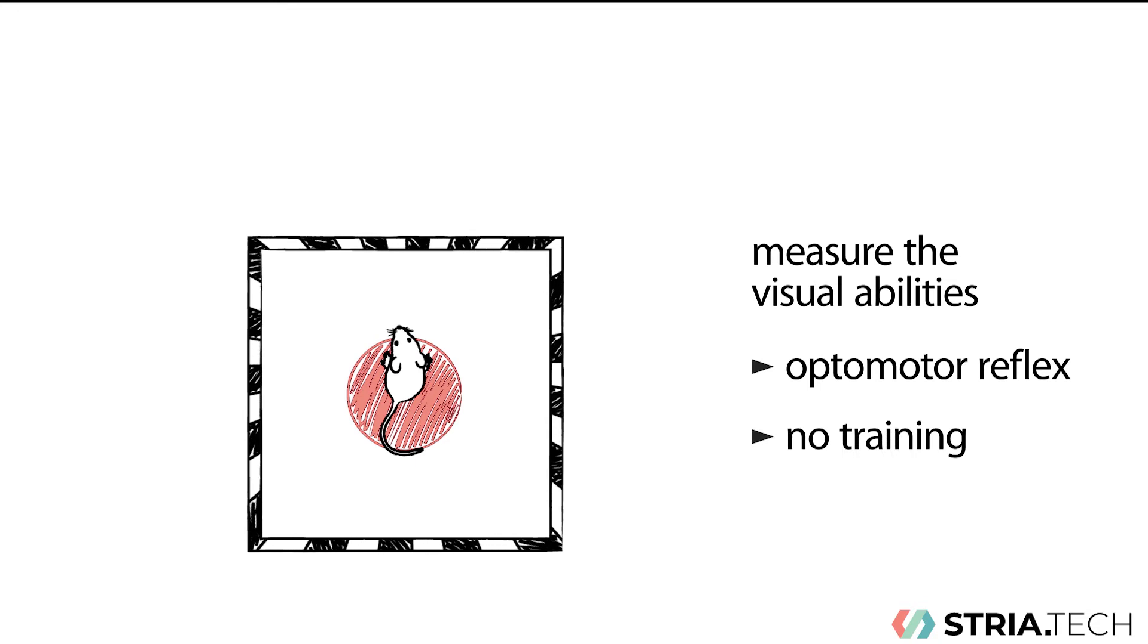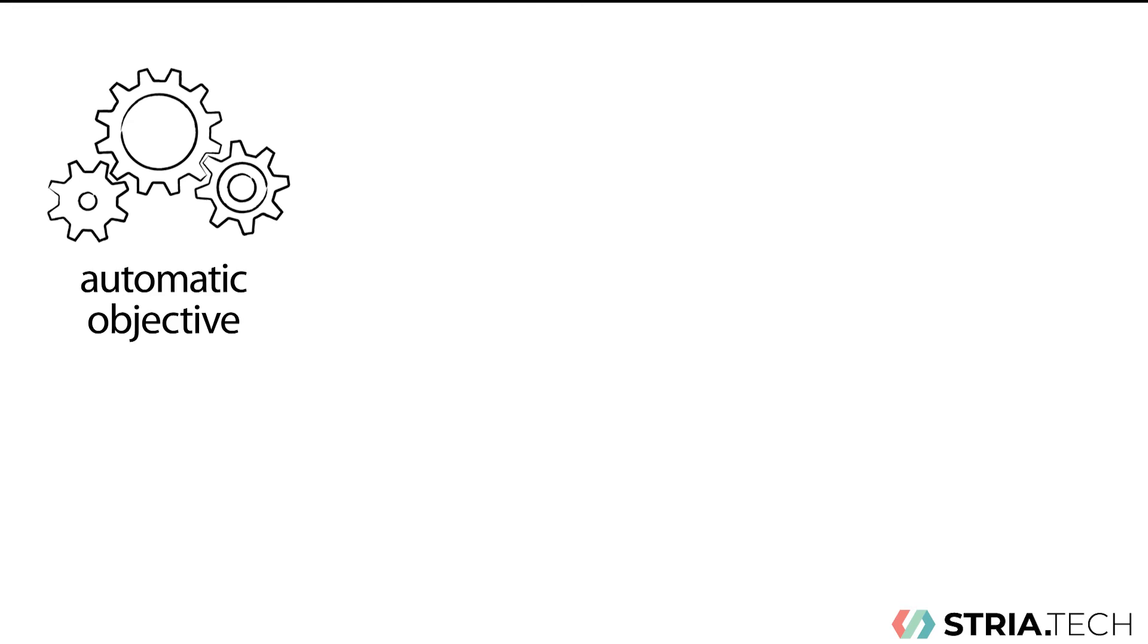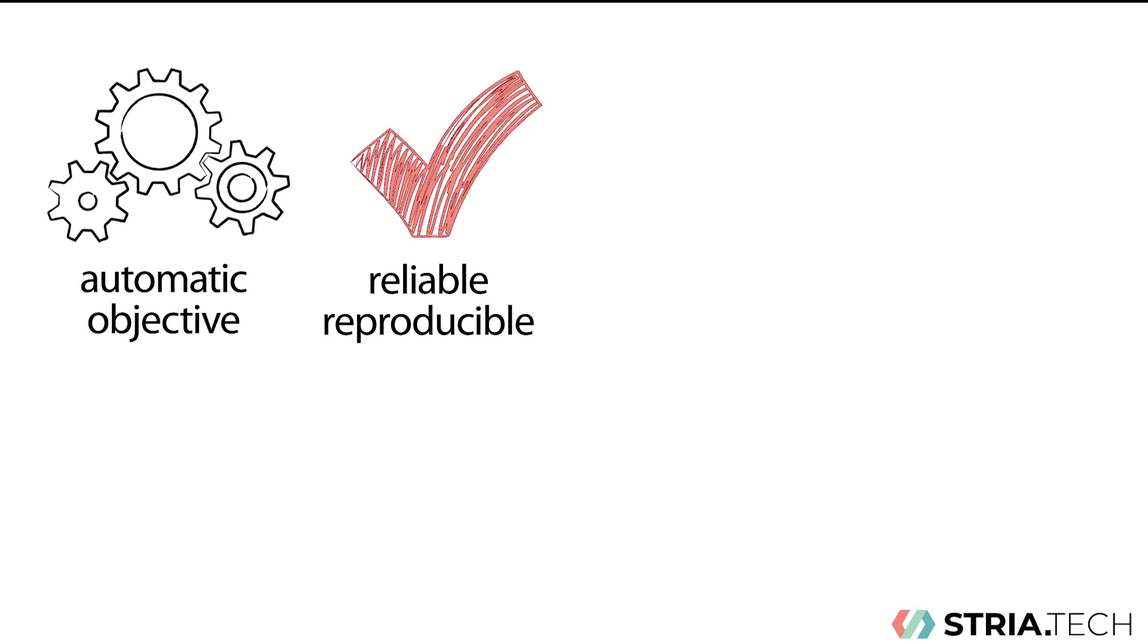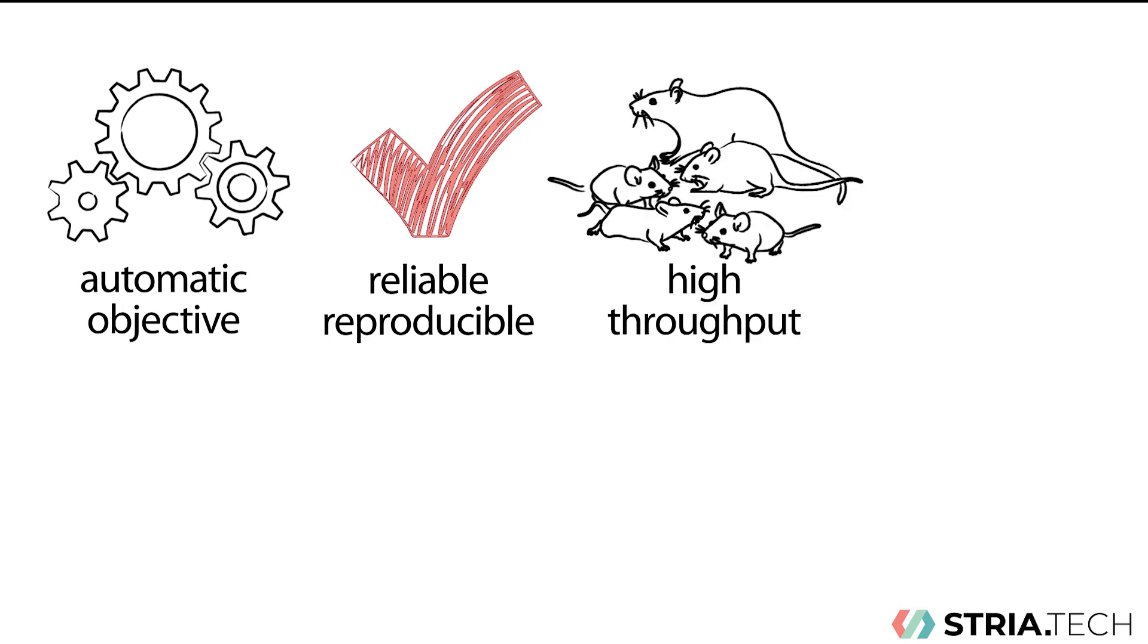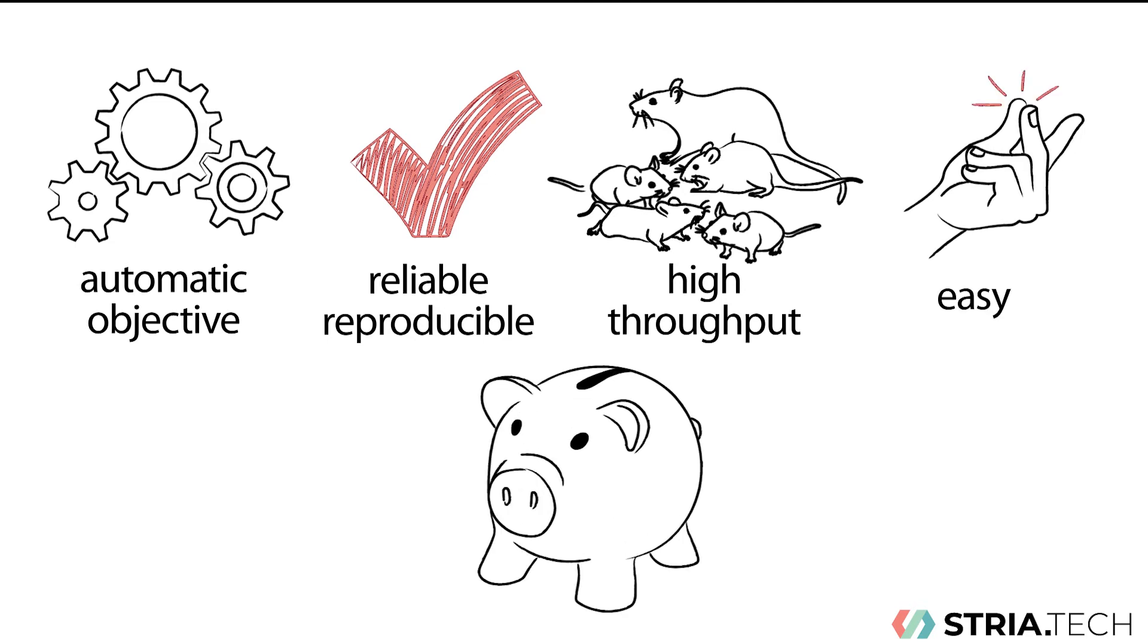The Optodrum analyzes this behavior automatically and objectively. The results are reliable and reproducible and can be obtained quickly, giving you high throughput data collection. It is very easy to perform these experiments.